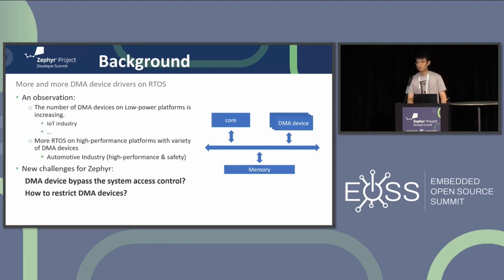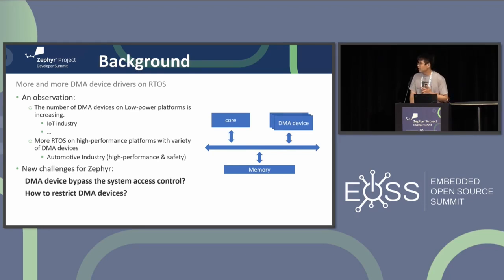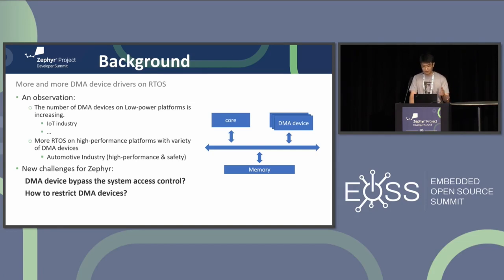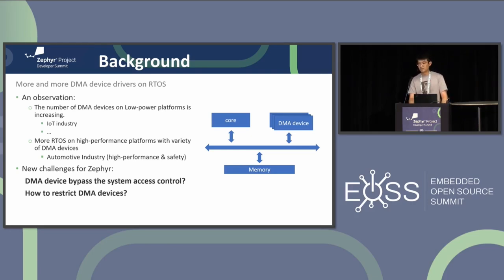Since the RTOS is still the mainstream technology to manage low power platforms, the second point is there is an increasing demand for running RTOS on high performance platforms — for example, self-driving requires a platform with high performance and safety at the same time, and a better solution would be running Zephyr on high performance platforms. High performance platforms always come with multiple DMA devices, such as PCI devices.